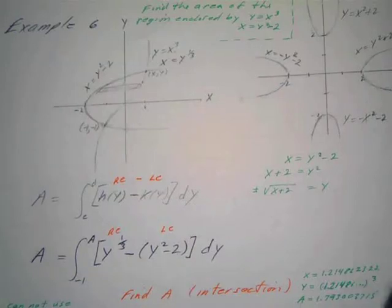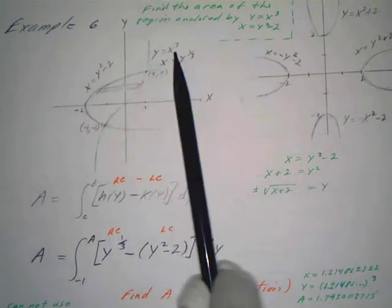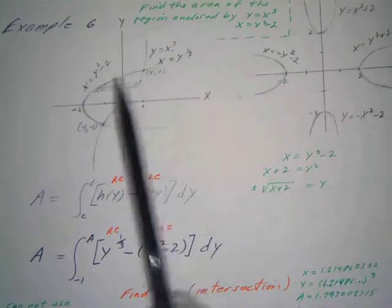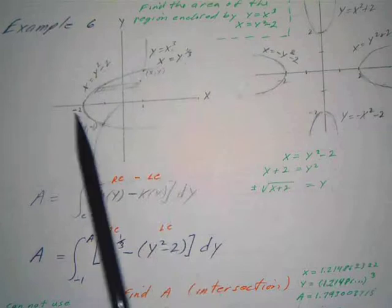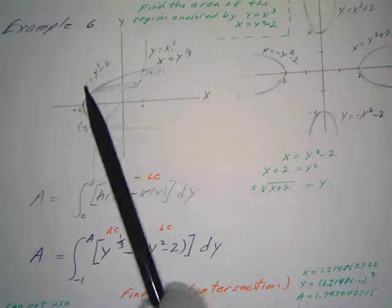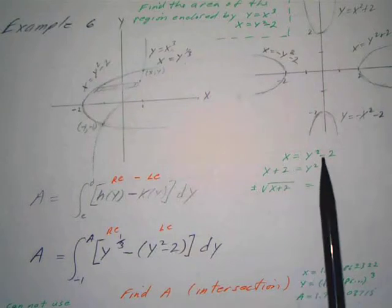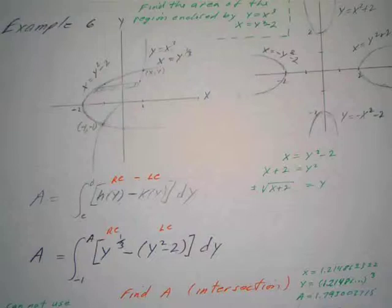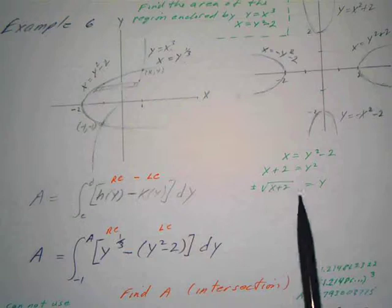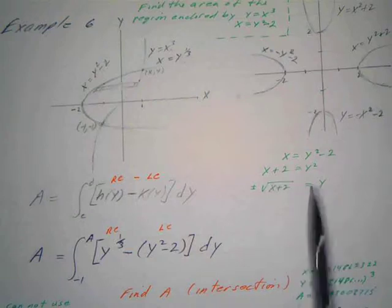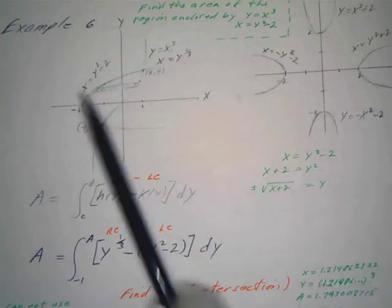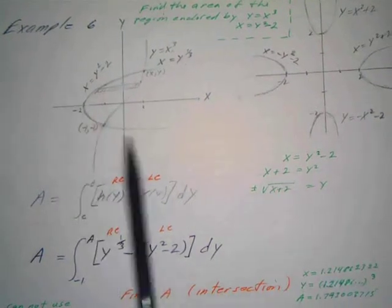On the calculator, y equals x cubed is no problem, but x equals y squared minus 2 is an issue because the calculator only graphs functions, not relations. So I have to break it into two parts by solving for y: add two to both sides to get y squared equals x plus 2, so y equals plus or minus the square root of x plus 2. The positive branch gives the upper part of the parabola, the negative gives the lower branch.